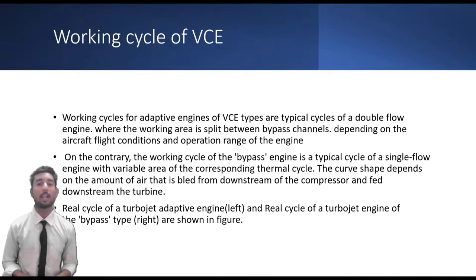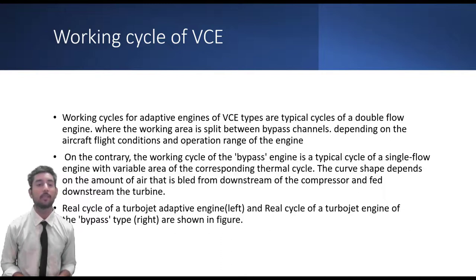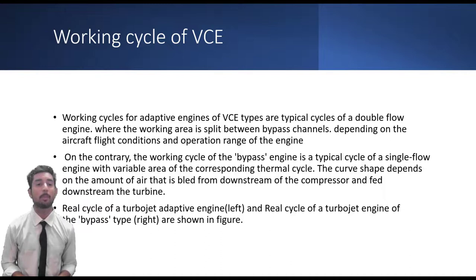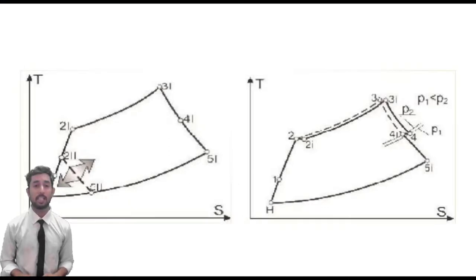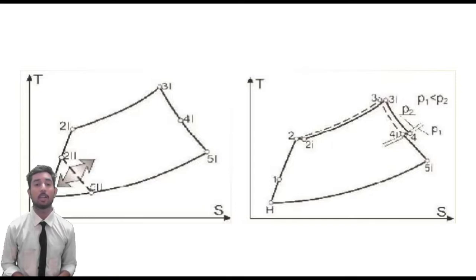The working cycle of the variable cycle engine shows a typical cycle of a double-flow engine, where the working area is split between bypass channels depending on the aircraft flight condition and operating range. Conversely, the working cycle of the bypass engine is typically the cycle of a single-flow engine with a variable area of the corresponding thermal cycle, the curve shape depending on the amount of air bled from downstream of the compression and downstream of the turbine. The real cycle of the turbojet adaptive engine and the real cycle of the turbojet engine of the bypass type are shown in the slides.